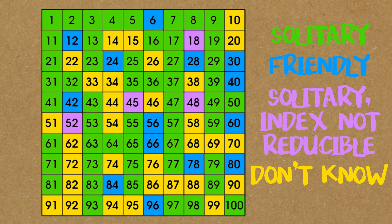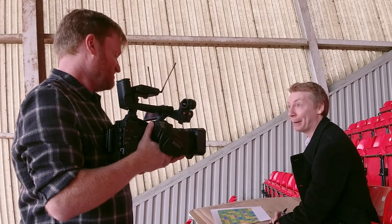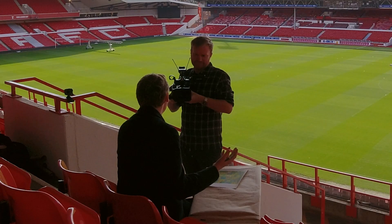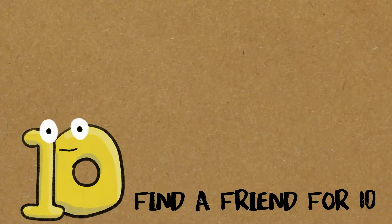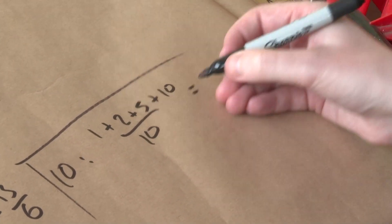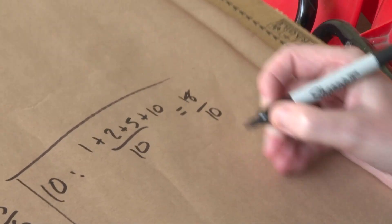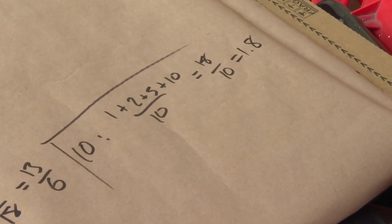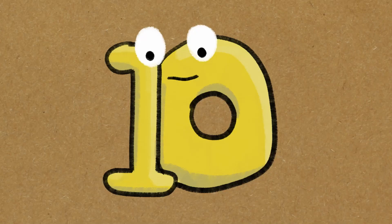The smallest number we don't know is 10. We don't know if 10 has friends or not. We've checked numbers going into the trillions and haven't found a friend for 10 yet. Let's work out 10's index: factors of 10 are 1 plus 2 plus 5 plus 10, divided by 10, giving 18 over 10 — that's 1.8. We are looking for a friend for 10 with an index of 1.8, but we haven't found it yet. Maybe 10 is solitary. What I love about this is that there are still mysteries about such a small, humble number like the number 10.